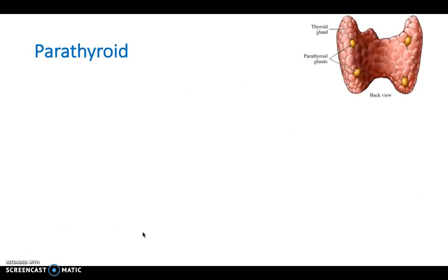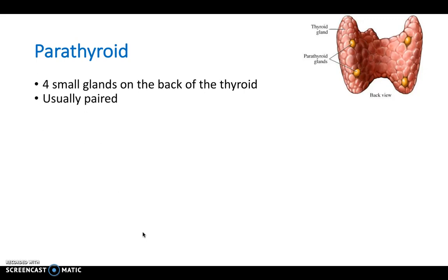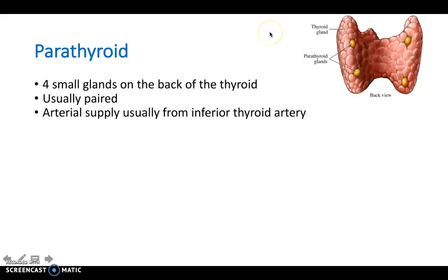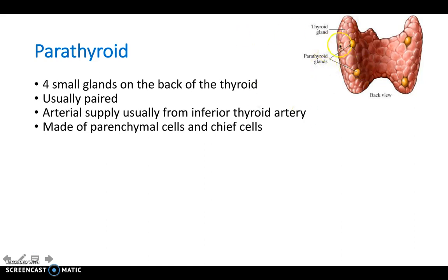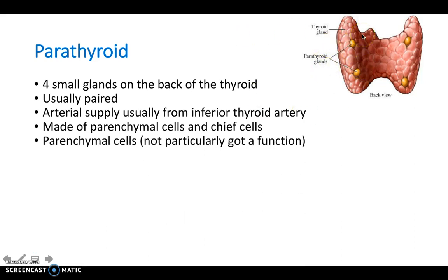Next we have the parathyroid glands, which are four small glands on the back of the thyroid — though not everyone has four; some people will have two, and they're usually paired. Their arterial supply is usually from the inferior thyroid artery. They're made up of parenchymal and chief cells, which differ in function. The parenchymal cells have an uncertain function, however chief cells particularly secrete PTH.